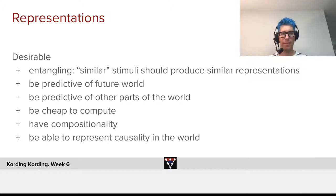The second one is I want it to be predictive of the future world. A good representation allows us to predict what happens around us. We want the representation to be predictive of other parts of the world. What I currently see should tell me something about what happens in other areas.